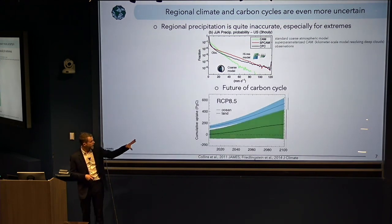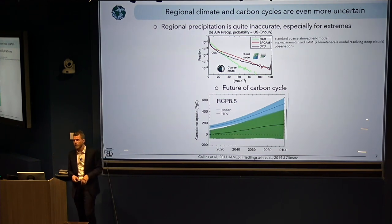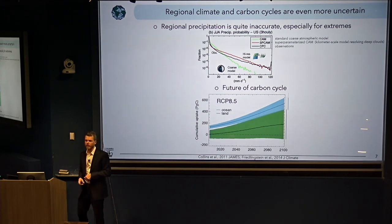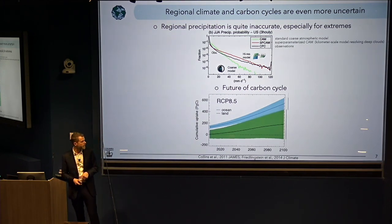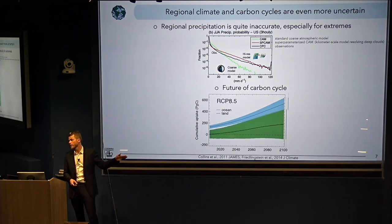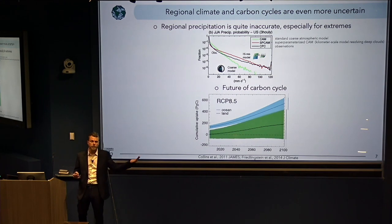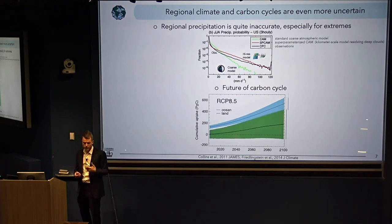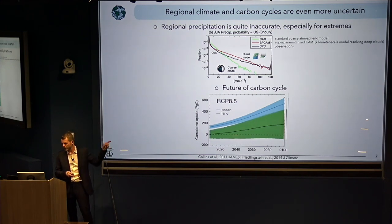Looking at the carbon cycle — land and ocean — and thinking about projections into the future, the main take-home is that we have huge uncertainties. Looking at inter-model variability across different modeling centers, in terms of land we don't even know whether we'll have a sink or a major source into the future. So we are basically in the dark in terms of understanding the future carbon cycle. That's a major issue when thinking about climate mitigation strategies, because we'd like to know whether we'll keep roughly one-third of the emissions moving forward into the future.